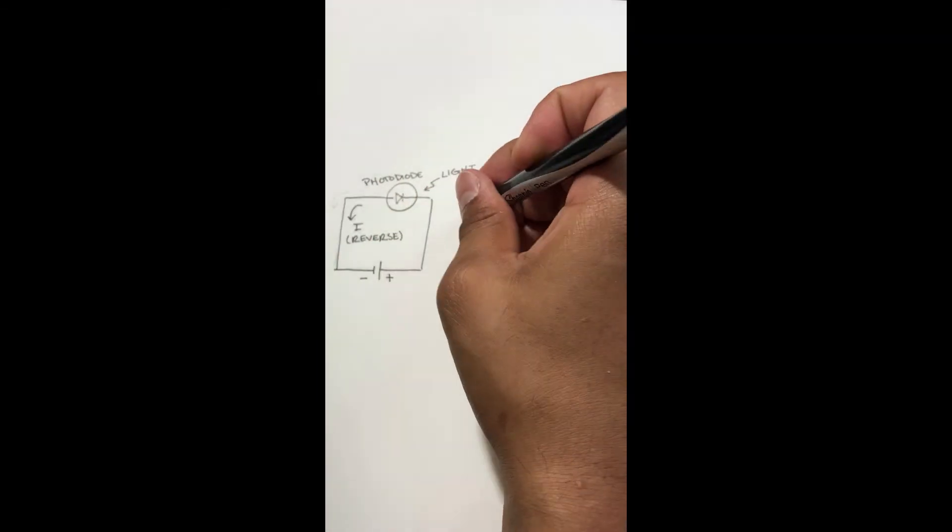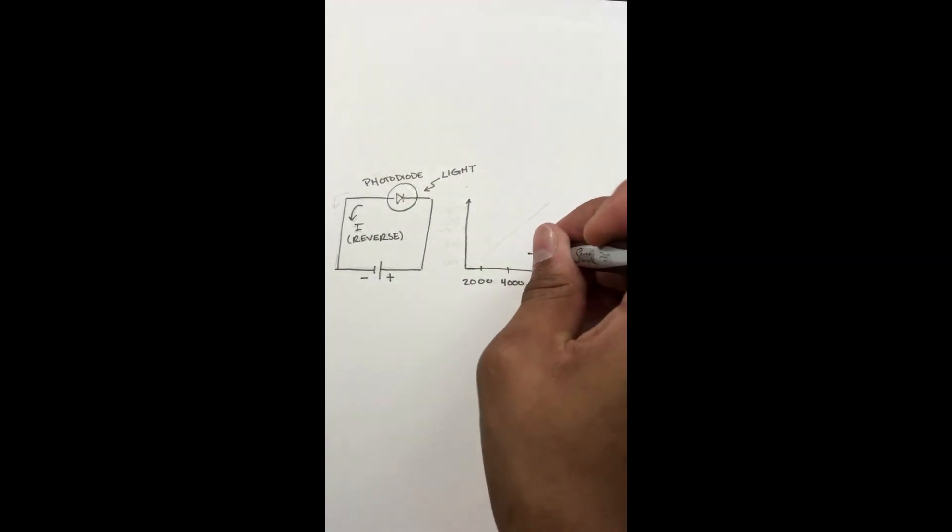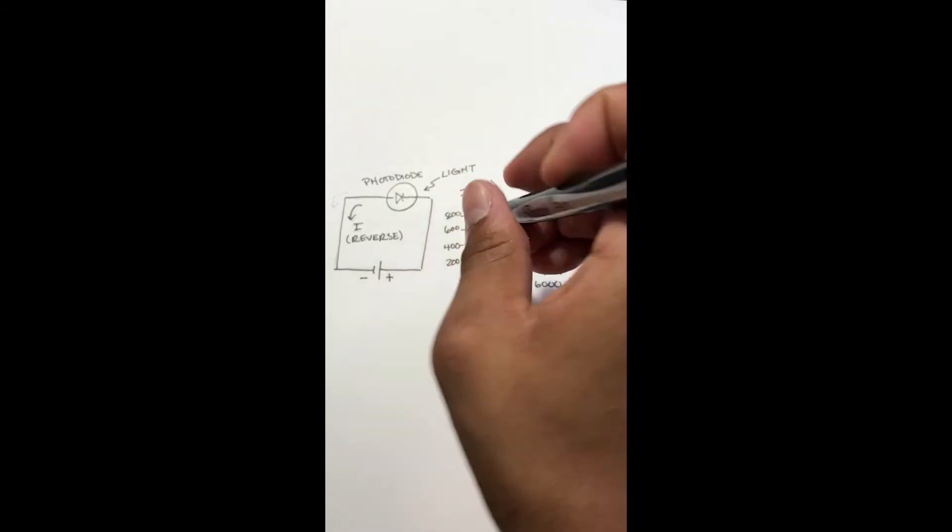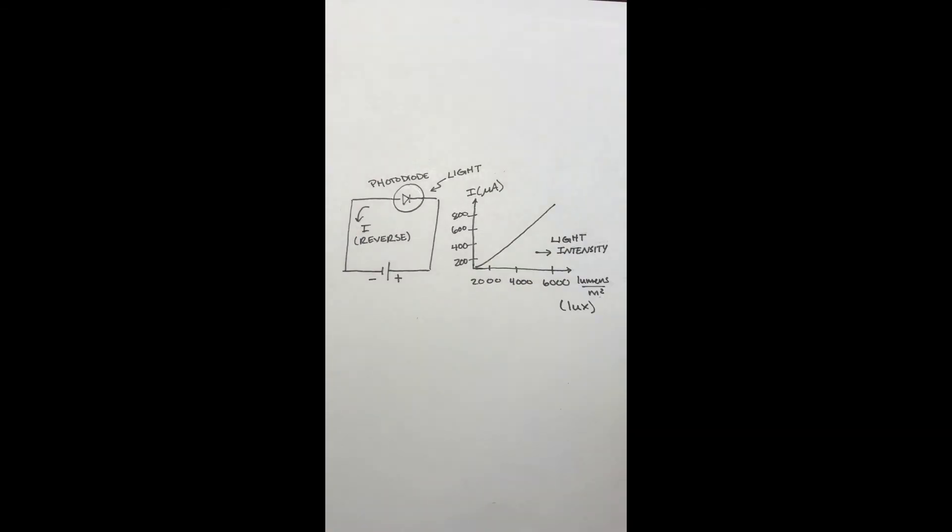A silicon photodiode's responsivity is best between wavelengths of 190 to 1100 nanometers making them suitable for commonly used laser wavelengths such as argon, helium neon, aluminum gallium arsenide and others.